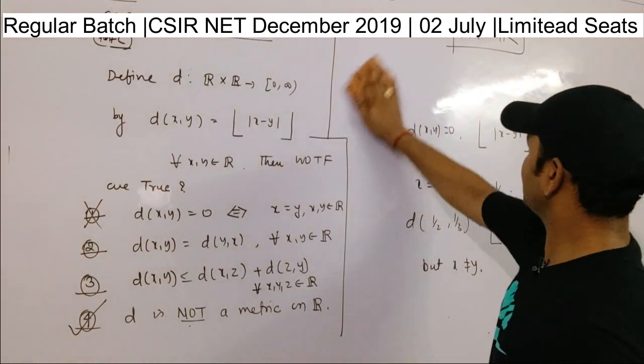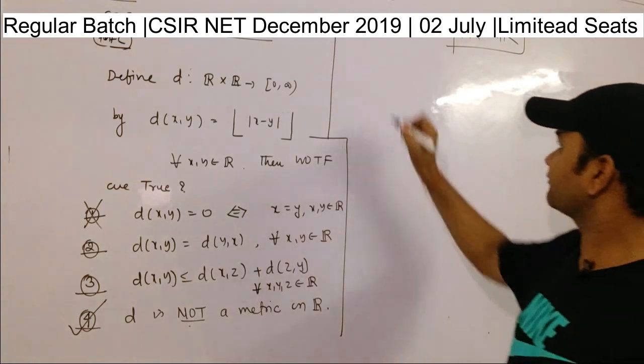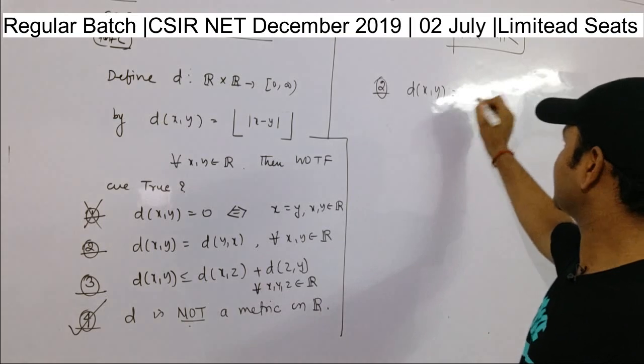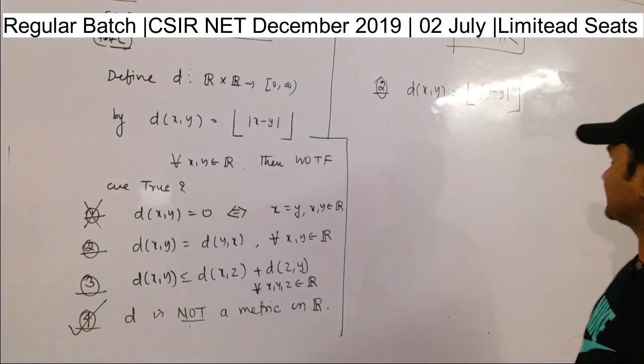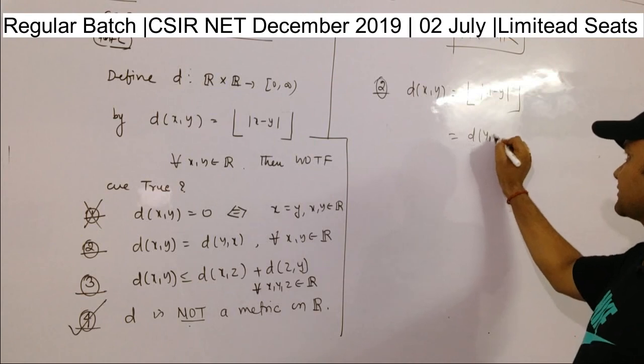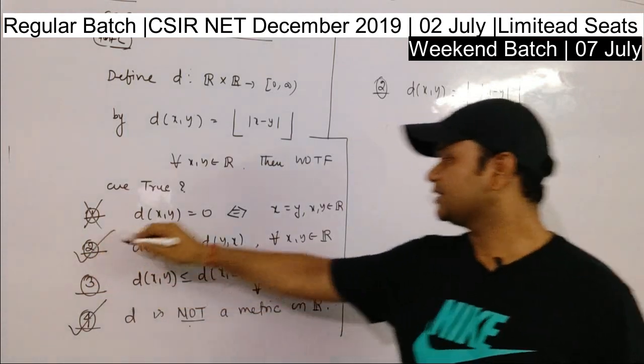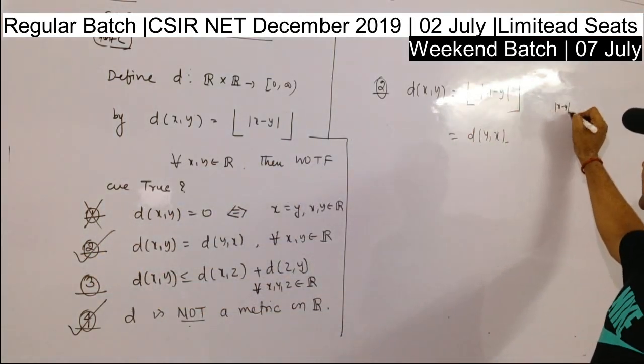Let's come to the second option. What is the second option? Second option is that d(x,y) is nothing but the greatest integer of this, right? And this is of course equal to d(y,x). So d(x,y) = d(y,x). This is a true statement.